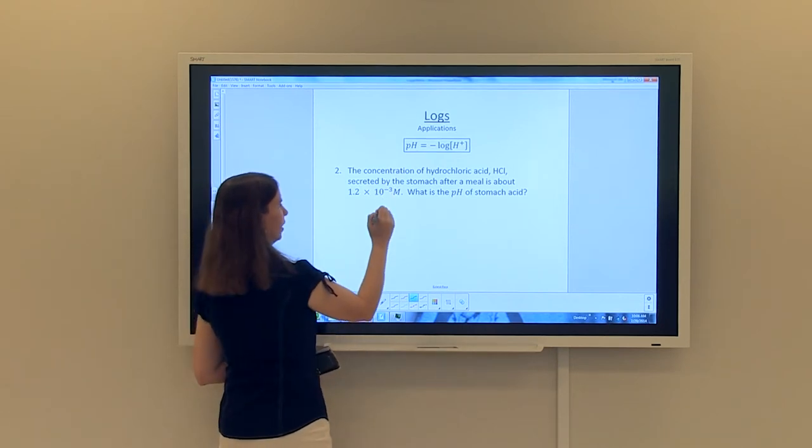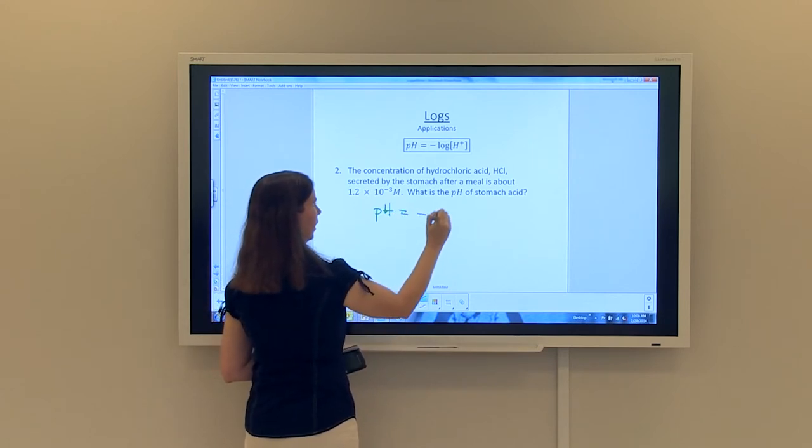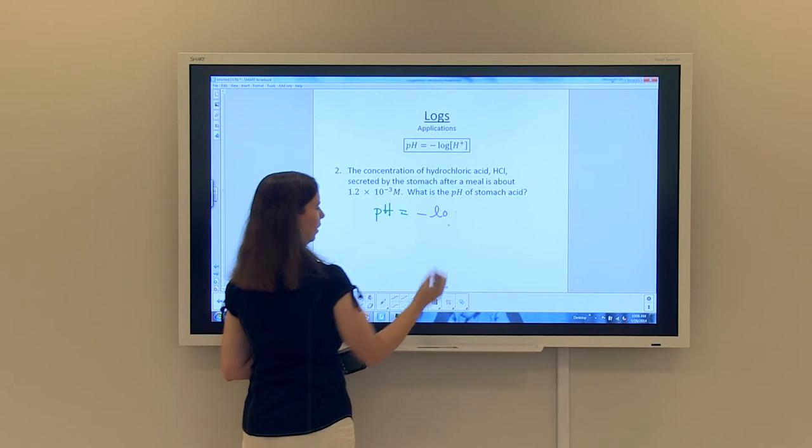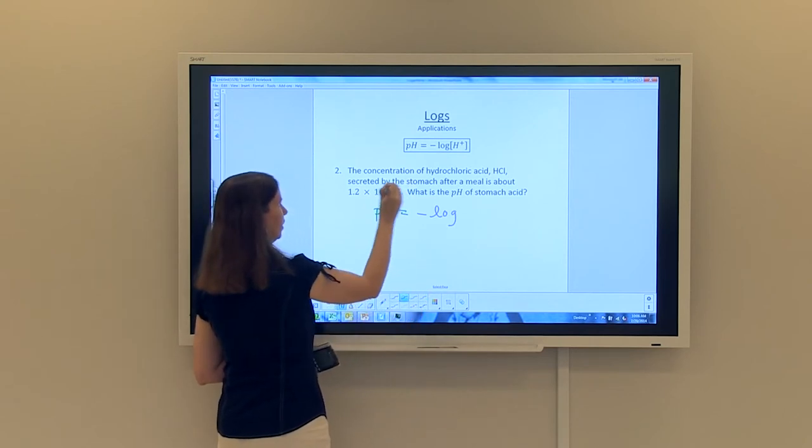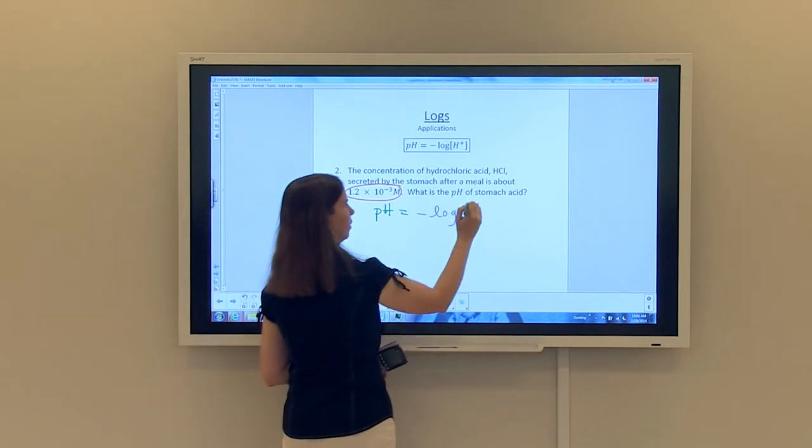using exactly the same formula. So pH is equal to negative log. And then we're going to substitute in our concentration, which is 1.2 times 10 to the negative 3.